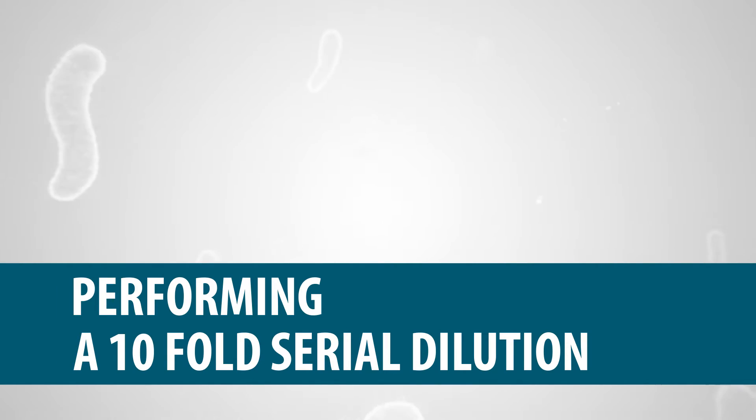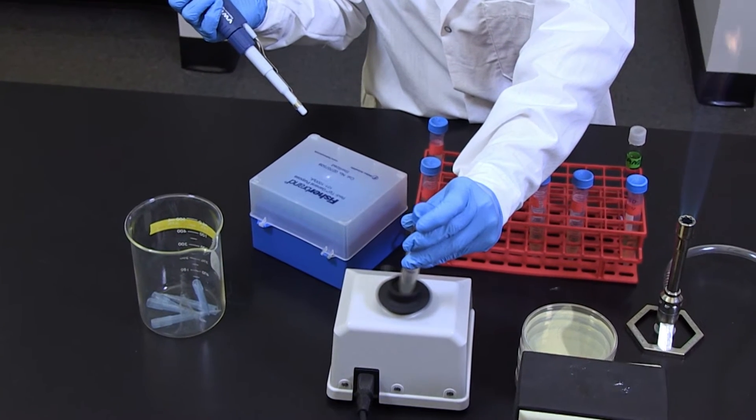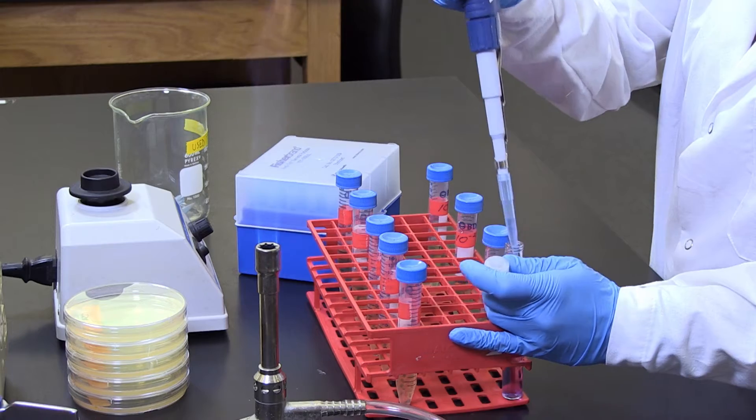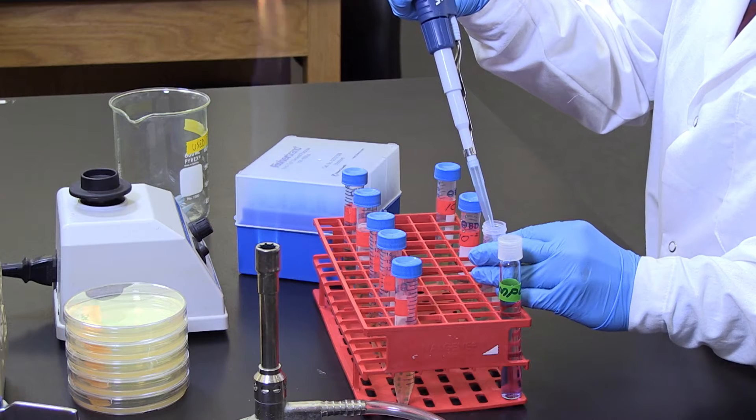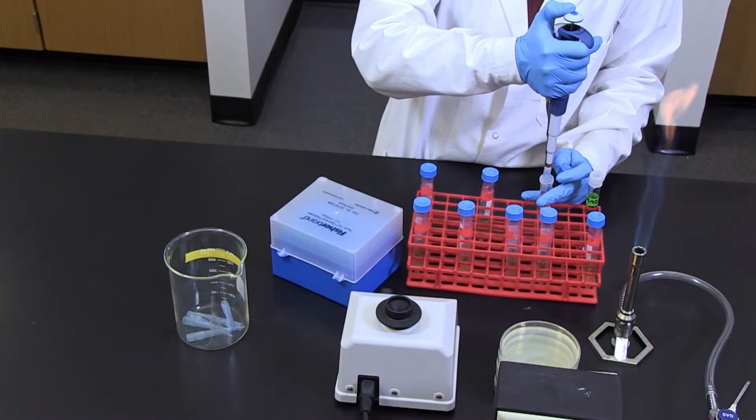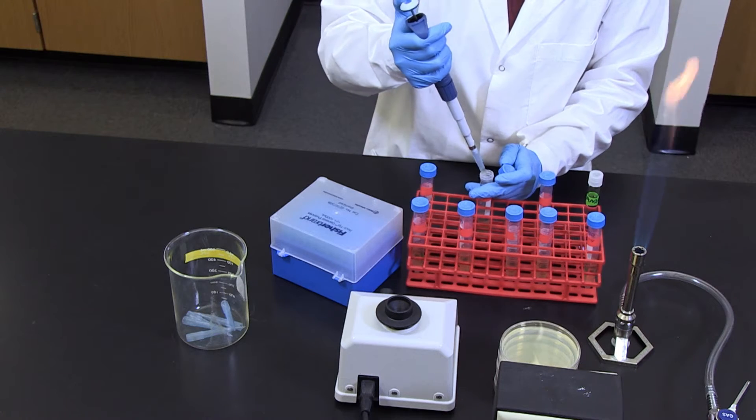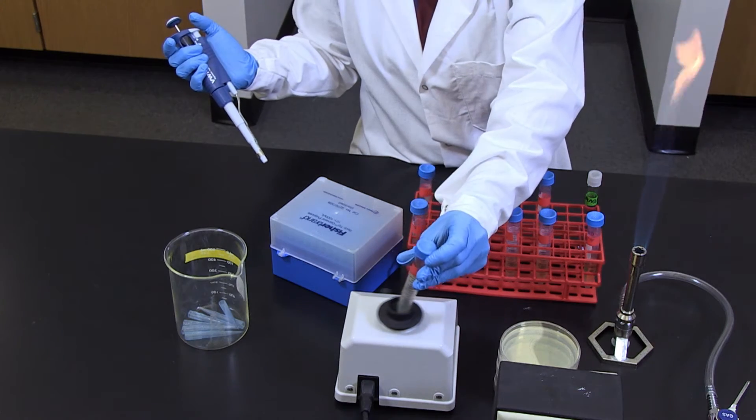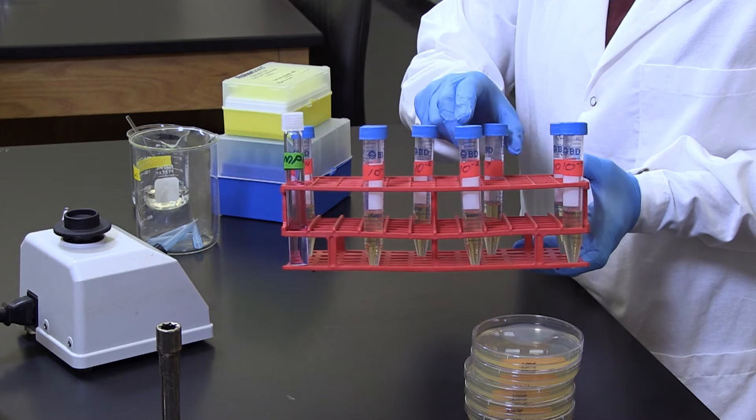Performing a ten-fold serial dilution. Before you start, use a vortex mixer to ensure the sample of bacterial culture is mixed well. Apply aseptic technique with a micropipette to transfer 0.5 milliliter or 500 microliters of the culture to the test tube labeled ten negative one. Mix the test tube well. Then, transfer 0.5 milliliter of this solution into the test tube labeled ten negative two. Mix this test tube well. This process is repeated until all eight test tubes are done. Now, you have a ten-fold serial dilution of your bacterial sample.